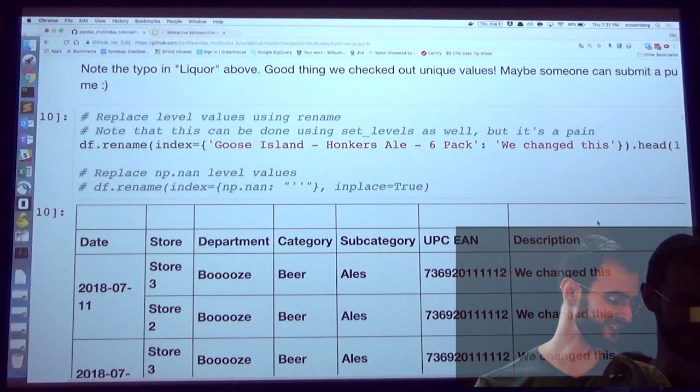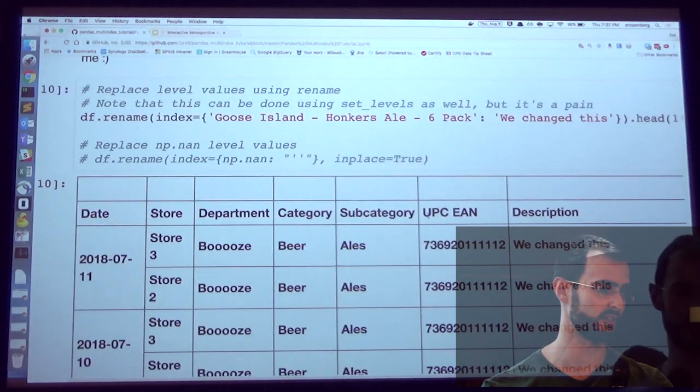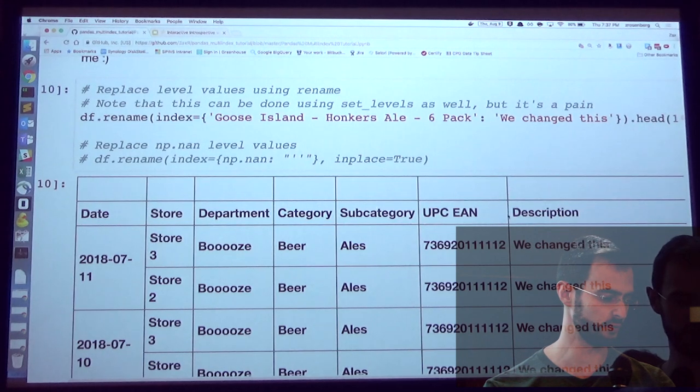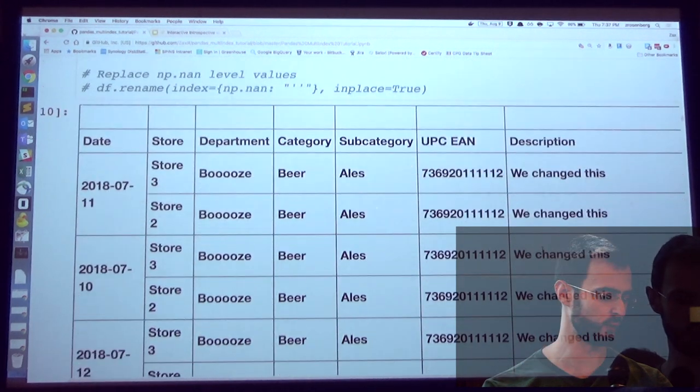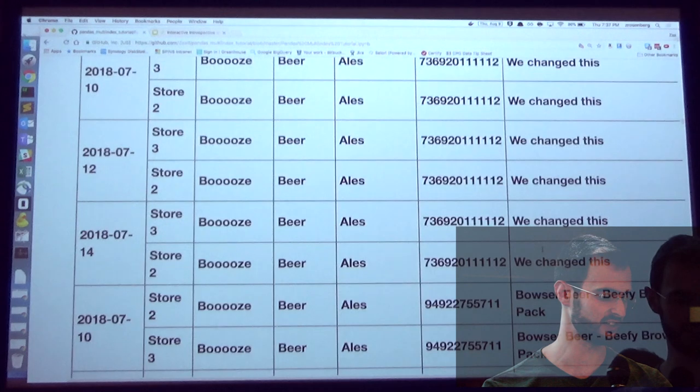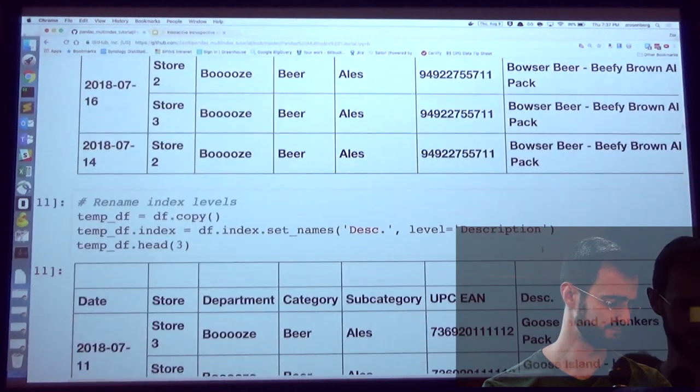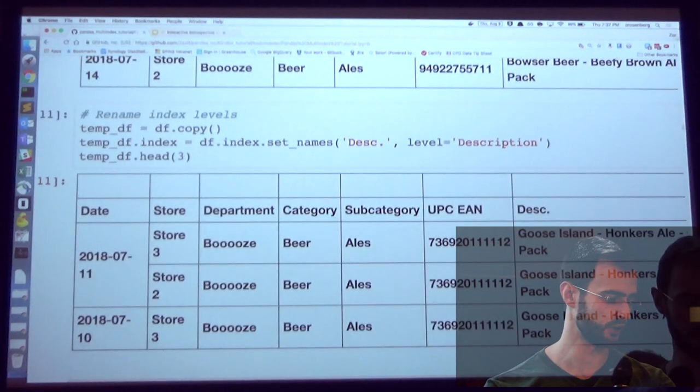And it's a good thing to check your values, and this is why. I did notice this beforehand, but not too much beforehand. So how else can we interact? Let's say we wanted to change values of stuff that we just looked up. We can use rename. Same thing as with a regular data frame, but not as intuitive as the other method names. And we can give it a dictionary and say anything that was called Goose Island in my description column before, we're going to call it we changed this now. And we'll see that that worked here, and it didn't accidentally replace everything.